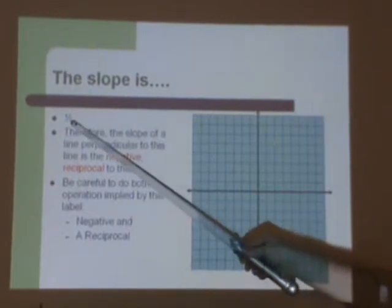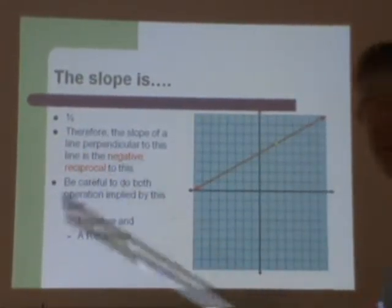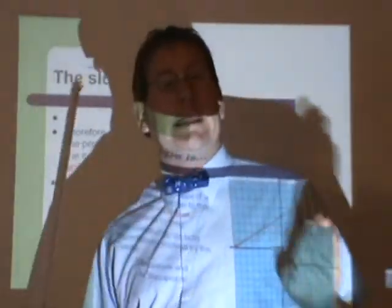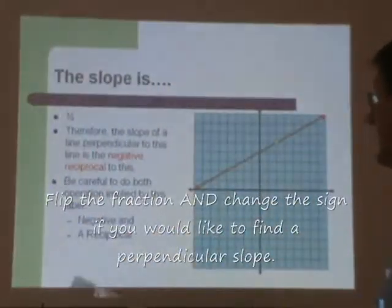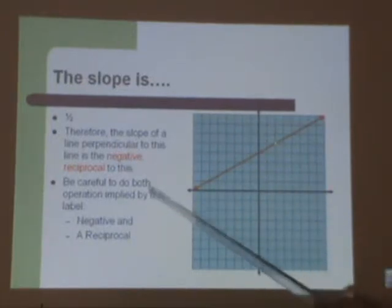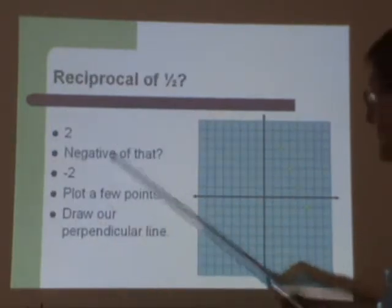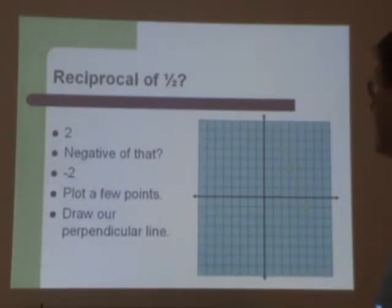Now, the slope of the original line is one-half. The slope of our new line has got to be a negative reciprocal of that line, if we expect it to be perpendicular. So we take the one-half, we flip it around to get the reciprocal, we slap a negative sign on it to give us the negative, and what do we get? Negative 2.